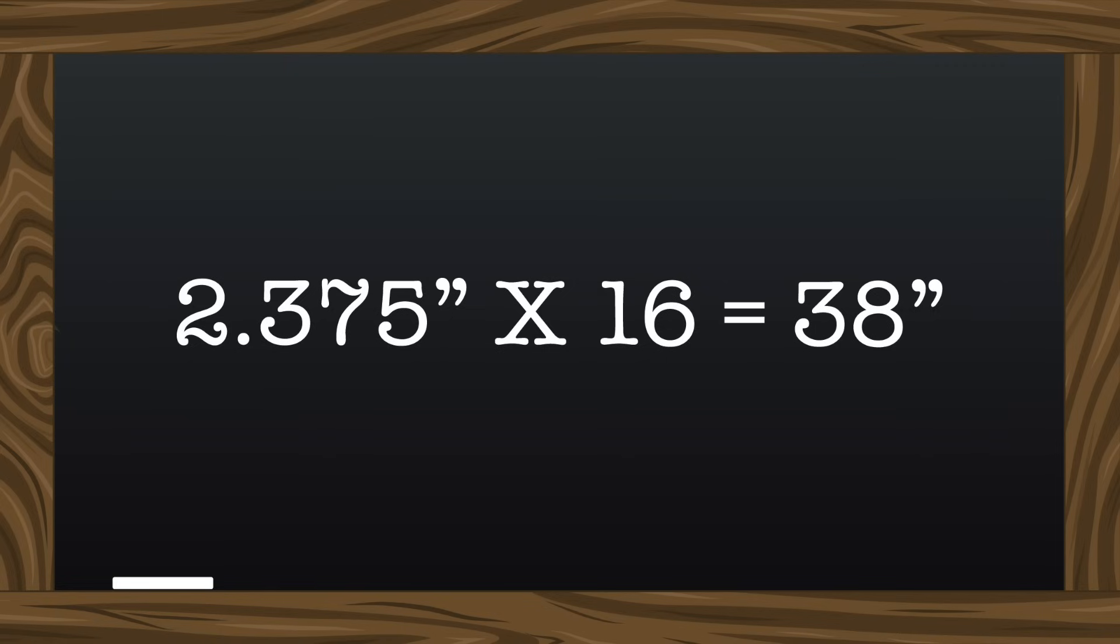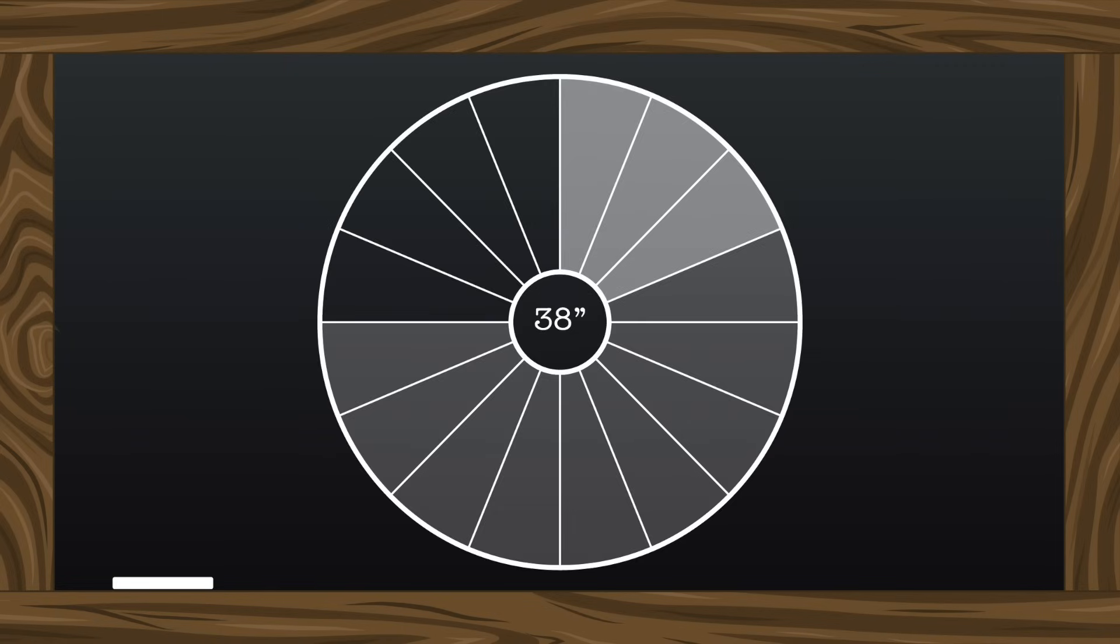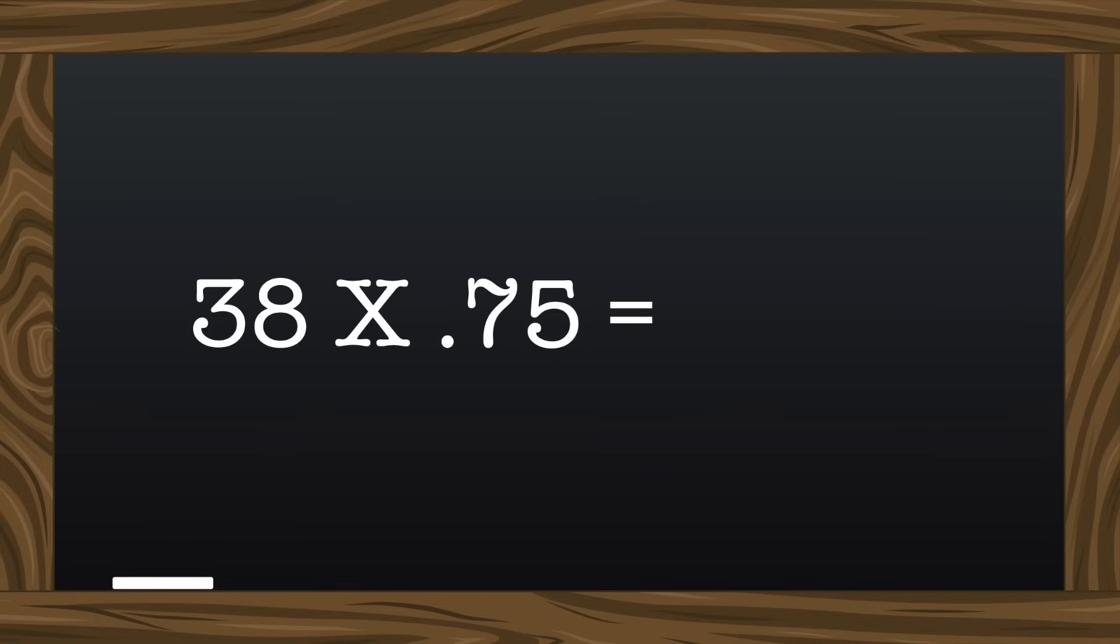So just to recap, 38 inches is the circumference of the theoretical inner circle, of which we will only be using three quarters. You can verify your measurement by multiplying it by 0.75. If you end up with your waist measurement again, you did it right.